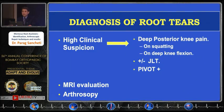Whenever we are thinking of root tears, always have a high level of suspicion. Many times they are missed preoperatively, but if a patient has posterior pain or pain on deep flexion then you should think of it. The pivot shift test is usually more positive — if a patient has an ACL tear but has an explosive pivot, then you should think of a root tear.